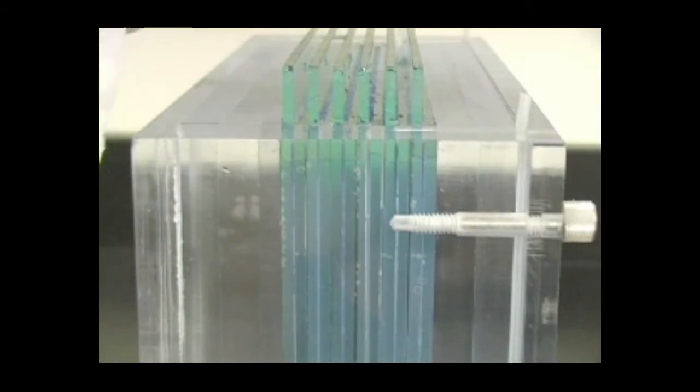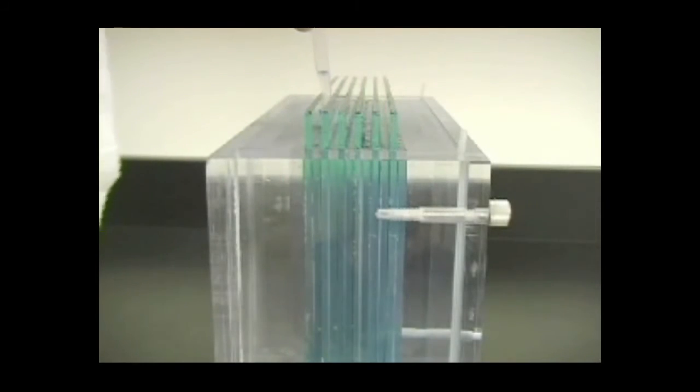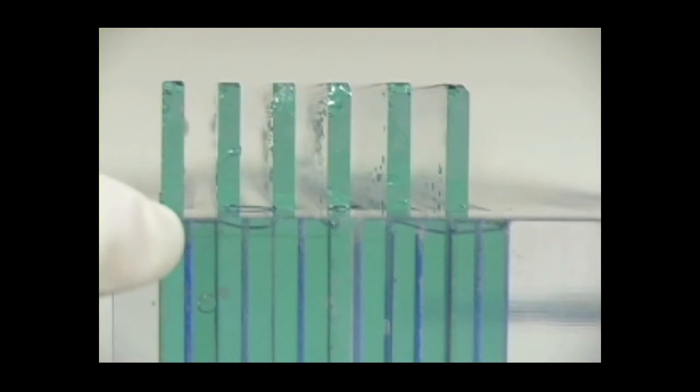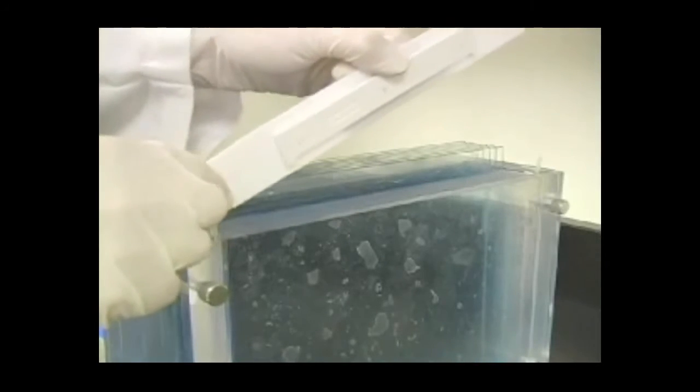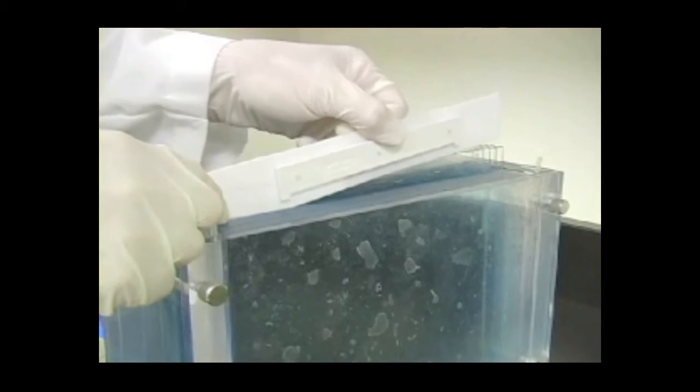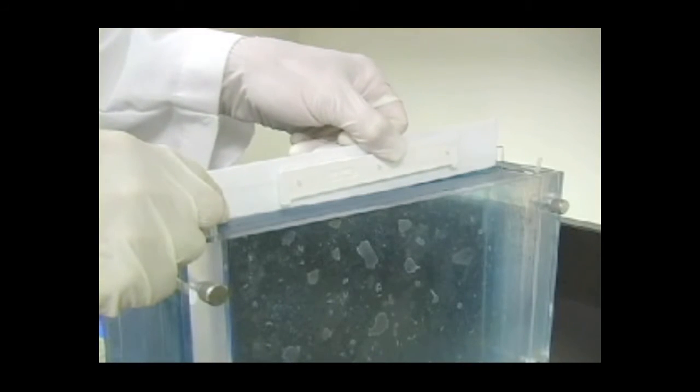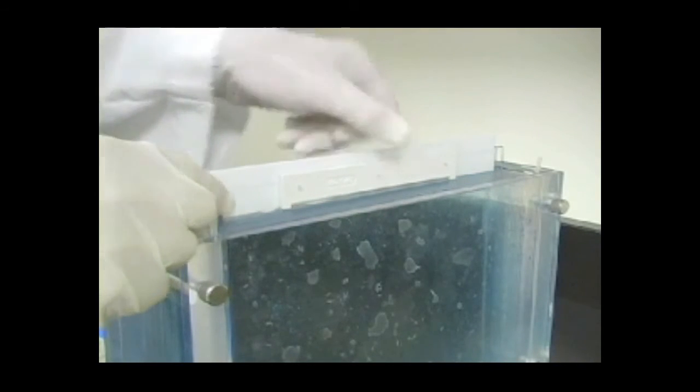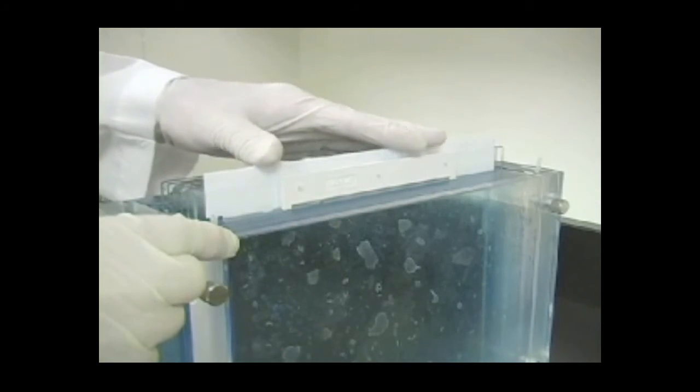Overlay each gel as quickly as possible with the same volume of water-saturated butanol or tert-amyl alcohol. Alternatively, insert a Protean Plus 2D comb into each hinged spacer plate. To minimize bubble formation, insert the comb at an angle.